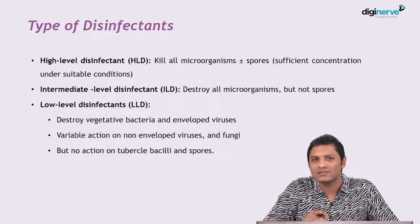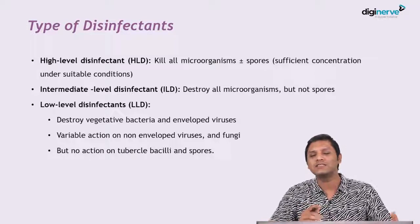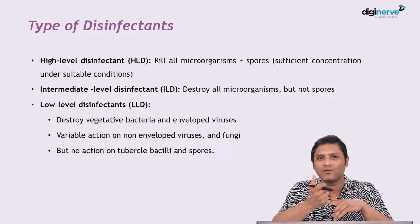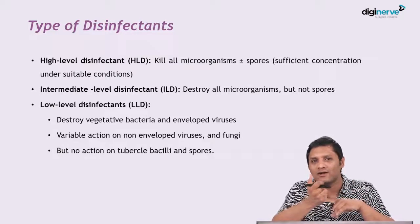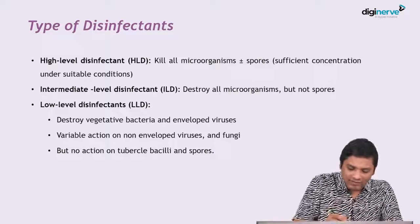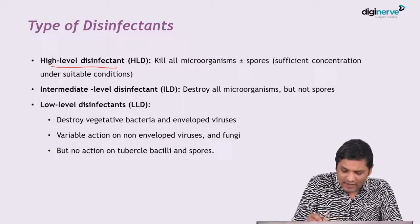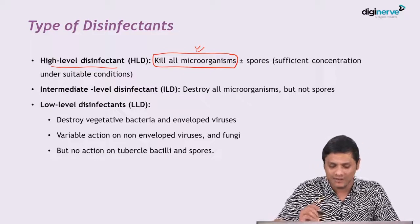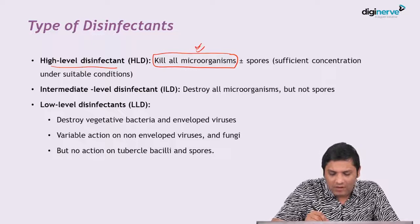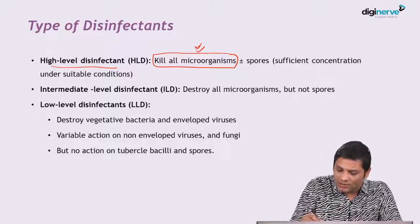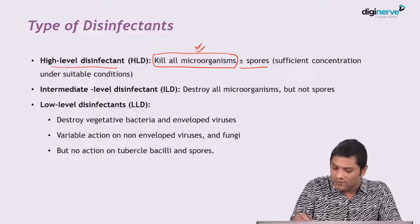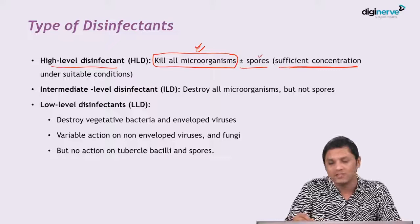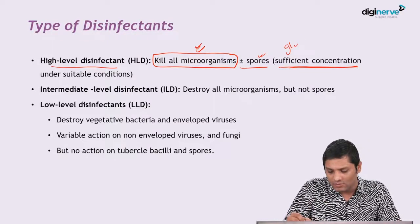Next, we will discuss the various classes of disinfectants. Based upon their ability to kill microorganisms, disinfectants are classified into high level, intermediate level, and low level. High level disinfectants can kill all microorganisms similar to sterilization methods. Regarding spores, they may or may not be able to kill them — if given in sufficient concentration, they can kill spores. The classical example is glutaraldehyde.